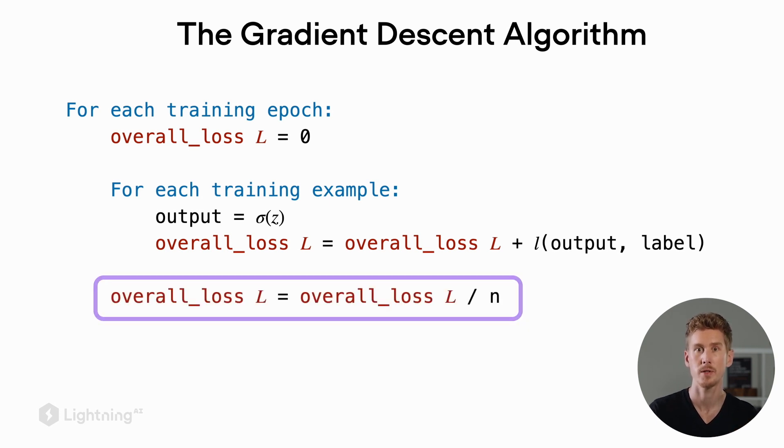So once we iterated over each training example and computed the overall loss by summing the individual losses, we then normalize the overall loss. So we normalize the overall loss by dividing by n, where n here is the size of our training set.